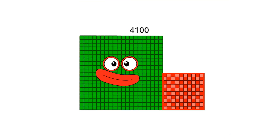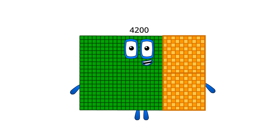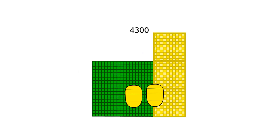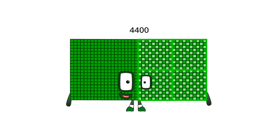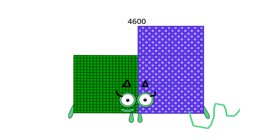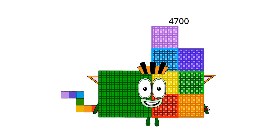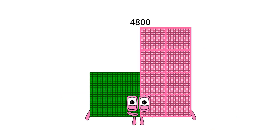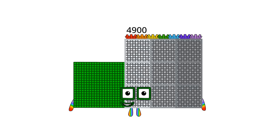4,000. 4,200. 4,300. 4,400. 4,500. Meow, meow. 4,600. Meow, meow. 4,700. 4,800. 4,900.